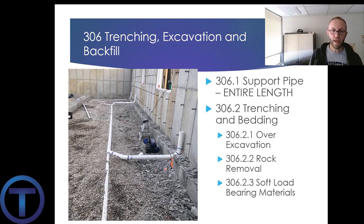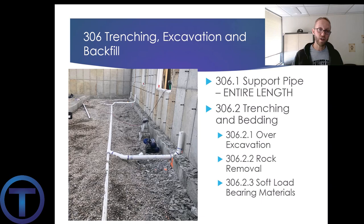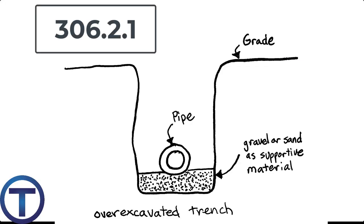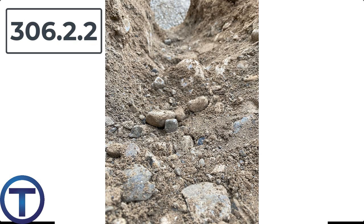306.2: Trenching and bedding. We look at over-excavation, rock removal, and soft load bearing. 306.2.1 over-excavation: if we dig too deep, we need to refill that trench to the level where the pipe will be with something supportive — gravel, sand, or compacted earth — not just loose dirt. For rocks, 306.2.2: if rocks would penetrate up into the pipe, we have to remove those rocks down to three inches below, then refill with something uniform and supportive to protect and support the pipe.